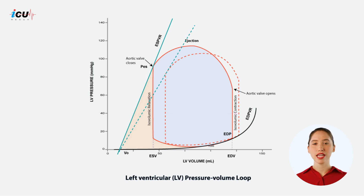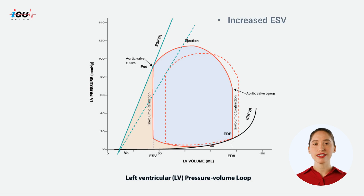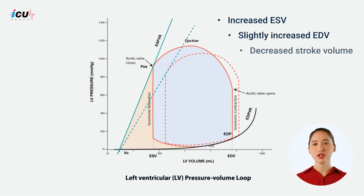So, in summary, decreased contractility leads to increased end systolic volume, constant or slightly increased end diastolic volume, and decreased stroke volume. Thank you for watching.